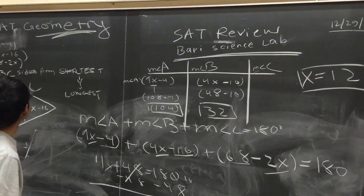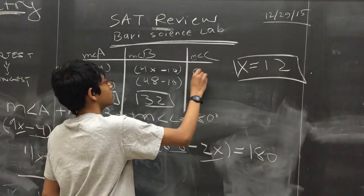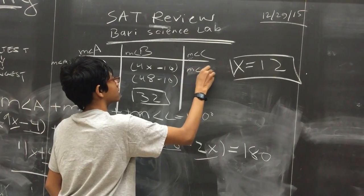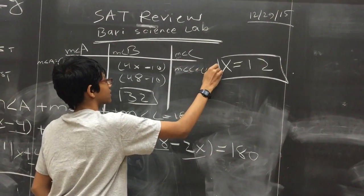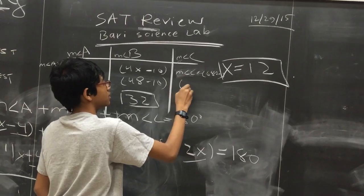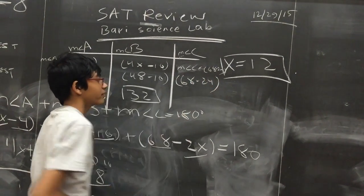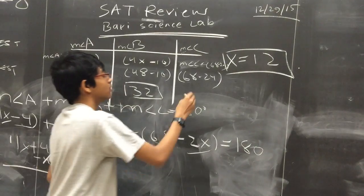And the measure for angle C is 68 minus 2x. We substitute 12 into that. We get 68 minus 24, giving us a value of 44.